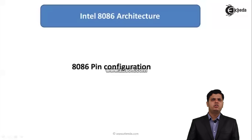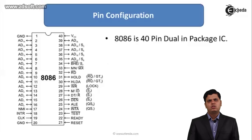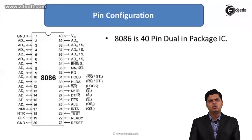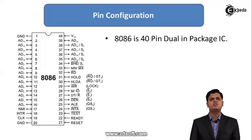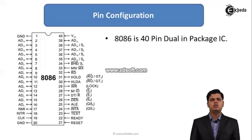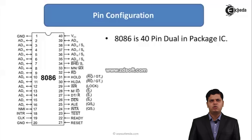We are going to discuss 8086 pin configuration in this lecture. This is the pin diagram of the 8086 microprocessor. The 8086 microprocessor is a 40-pin dual-in-package integrated circuit. The different signals or pins connected to this IC are arranged in a dual-in-package, meaning it has pin connections from two sides of the IC.